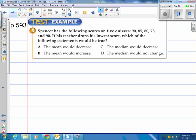All right, let's get to page 593. Here we are, example three. Spencer has the following scores on five quizzes: 90, 85, 80, 75, and 90. If his teacher drops his lowest score, and that would be the 75, which of the following statements would be true? The mean would decrease, the mean would increase, the median would decrease, or the median would not change.